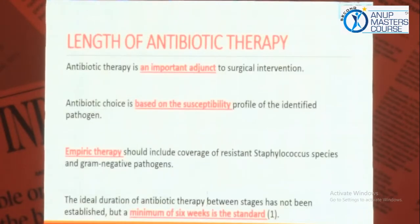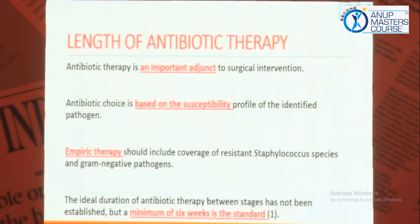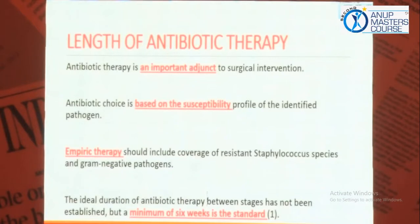One of the most important variables is length of antibiotic therapy. To be frank, there is actually no consensus on how long antibiotics should be given, whether intravenous or oral, and when to shift. Different schools of thought exist - the Oxford Group says you should give antibiotics after the second stage for at least a year; some literature says six months. The ideal answer at this stage is at least 6 weeks of intravenous antibiotics after the first stage. Per the latest AAOS guidelines, after 4 weeks you can shift to 2 weeks of oral. Minimum 6 weeks of antibiotics, then 2 weeks antibiotic-free, then go for the second stage.